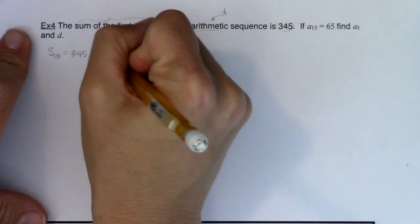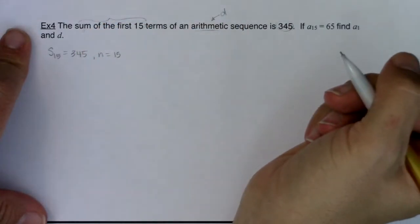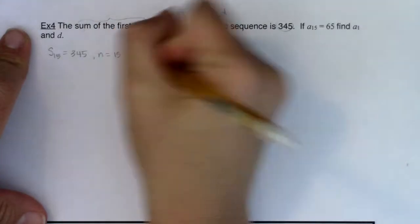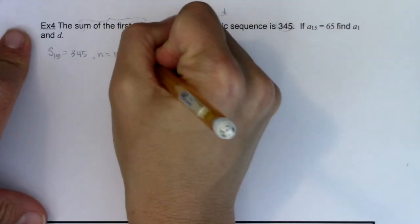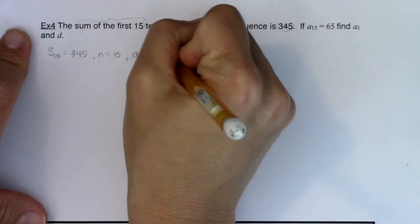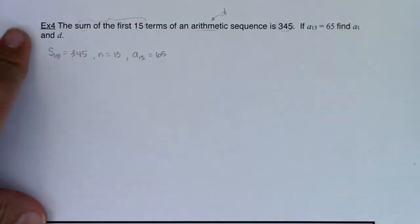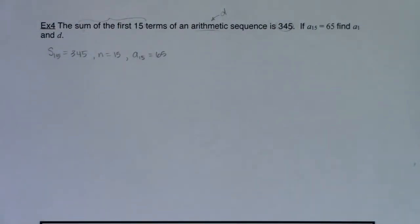I also can spot that n is equal to 15. I guess they're also giving me a sub 15 is equal to 65. Now they want a sub 1 and d. So there's a few ways you could go about doing this, but let's use those formulas that we just picked up on the previous example that deal with the sums of the arithmetic series, or the sums of an arithmetic sequence.